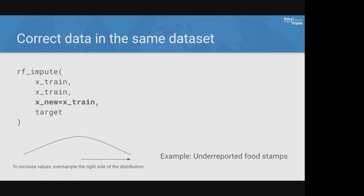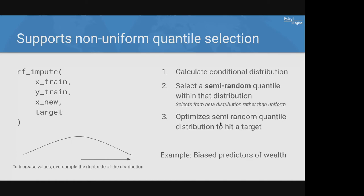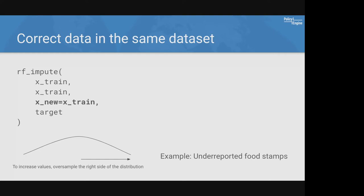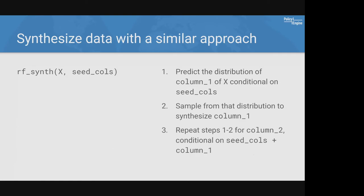Another way to use RF-Impute is correcting data within the same dataset. Many income datasets are known to under-report benefits received, like food stamps (SNAP). To improve the food stamp prediction, you pass your original dataset as both the training data and the new data to predict — basically a self-enhancement. RF-Impute also supports data synthesis, not just imputation.